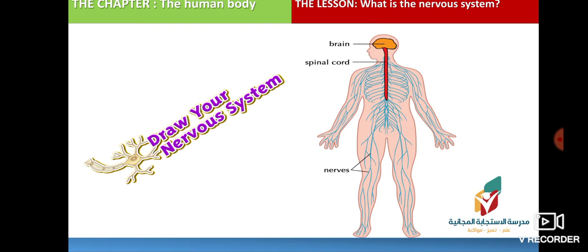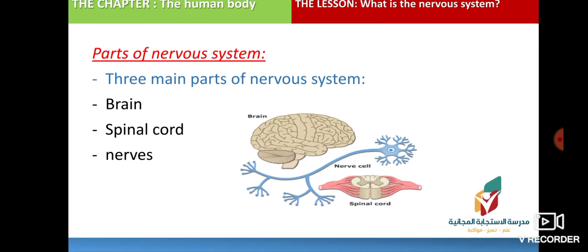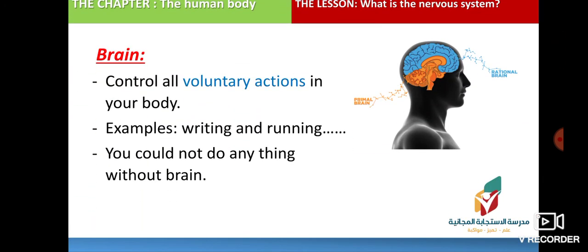The nerves are distributed to all body organs. There are three main parts of the nervous system: the brain, the spinal cord, and the nerves. The brain controls all voluntary actions in your body.